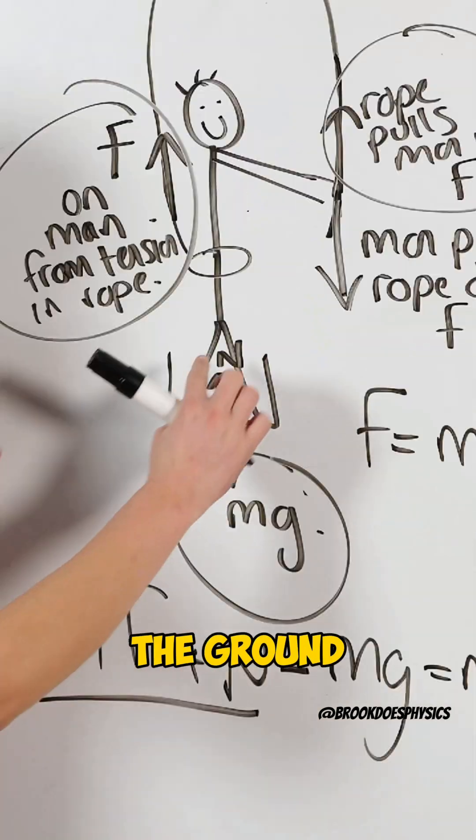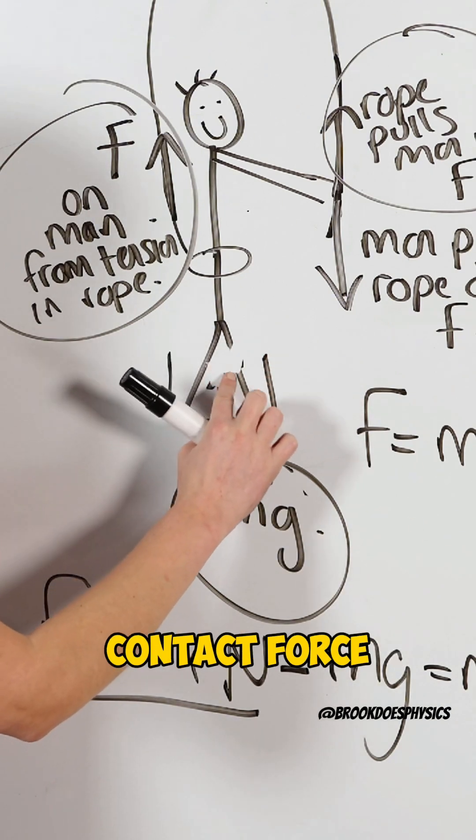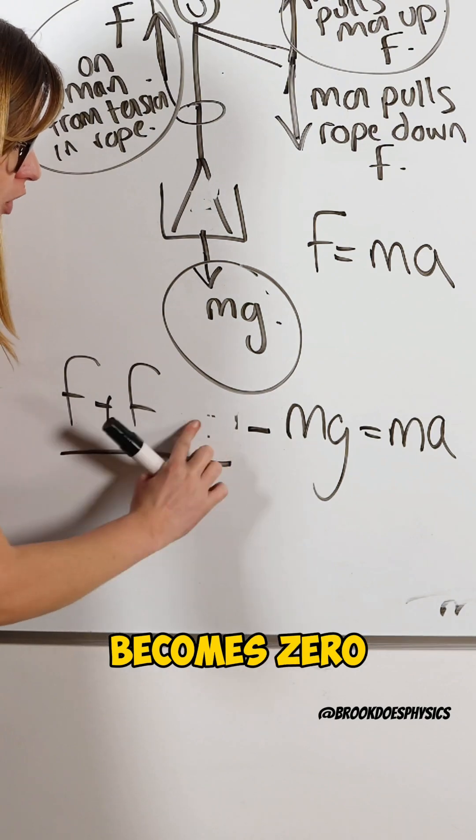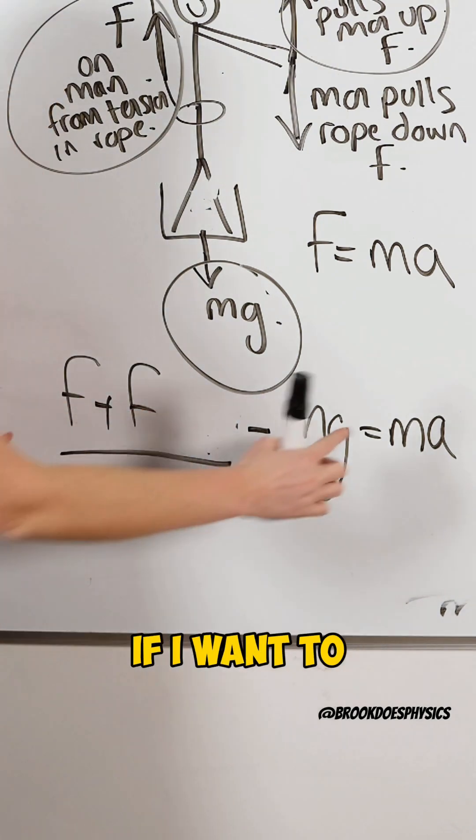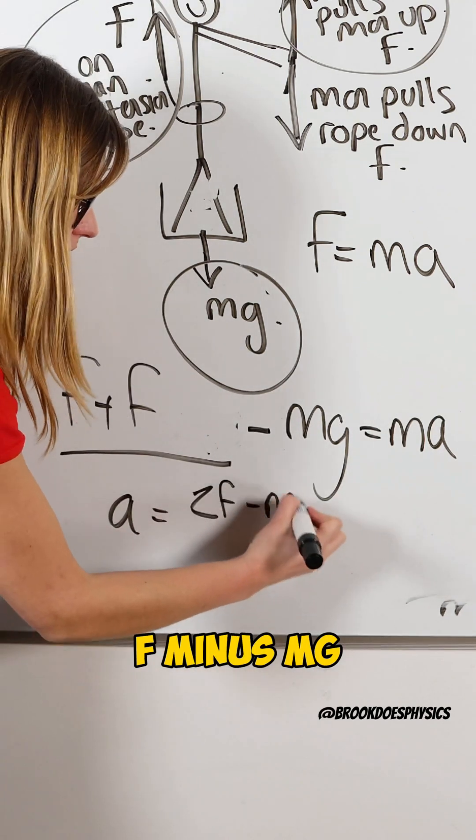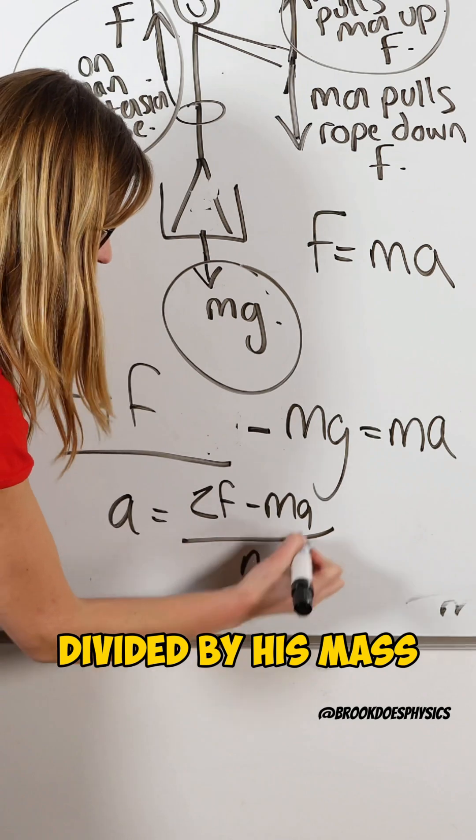But if he loses contact with the ground, there's no longer that normal contact force pushing him up from the ground, so that's why our normal contact force becomes zero. So now if we look at it, if I want to calculate his acceleration, I can see I have two times F minus Mg divided by his mass.